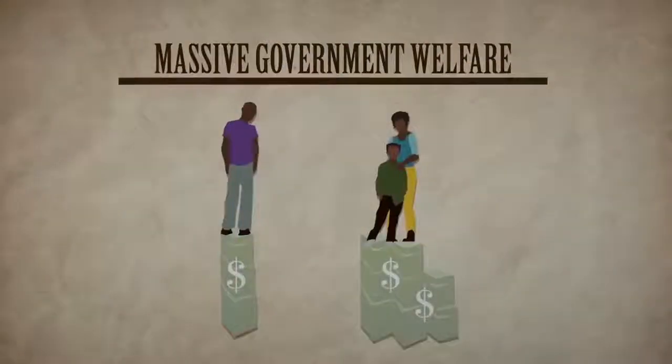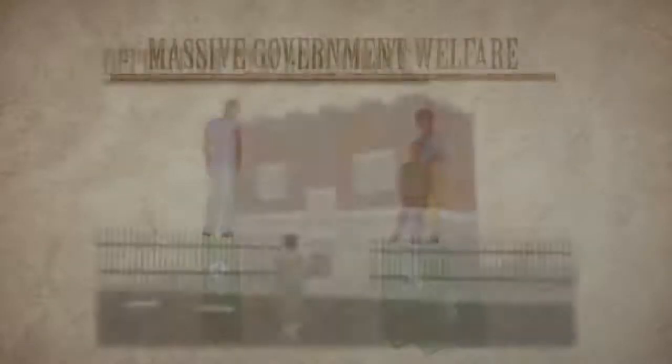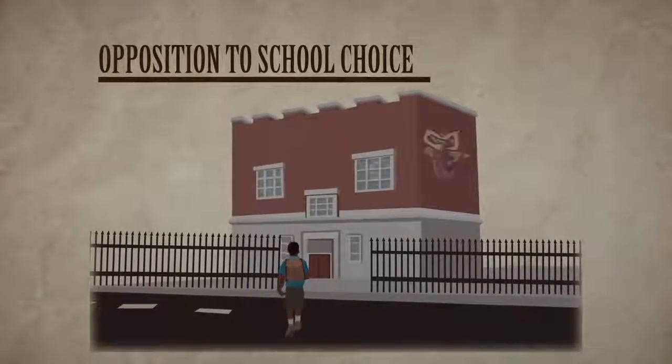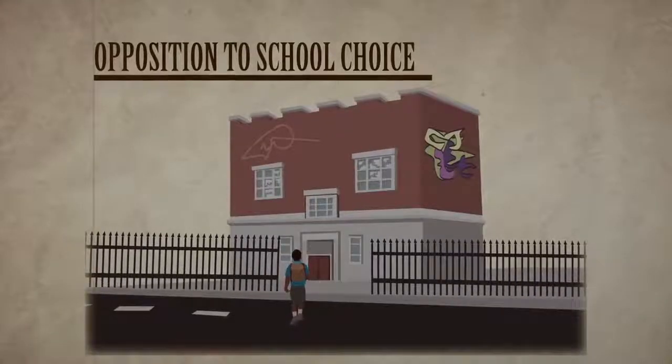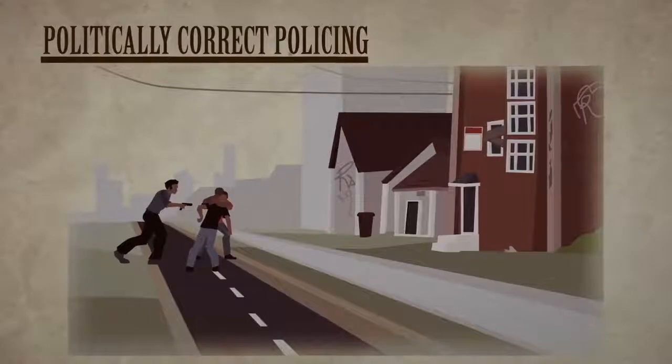Massive government welfare has decimated the black family. Opposition to school choice has kept them trapped in failing schools. Politically correct policing has left black neighborhoods defenseless against violent crime. So when you think about racial equality and civil rights, which political party should come to mind? I'm Carol Swain, Professor of Political Science and Law at Vanderbilt University, for Prager University.